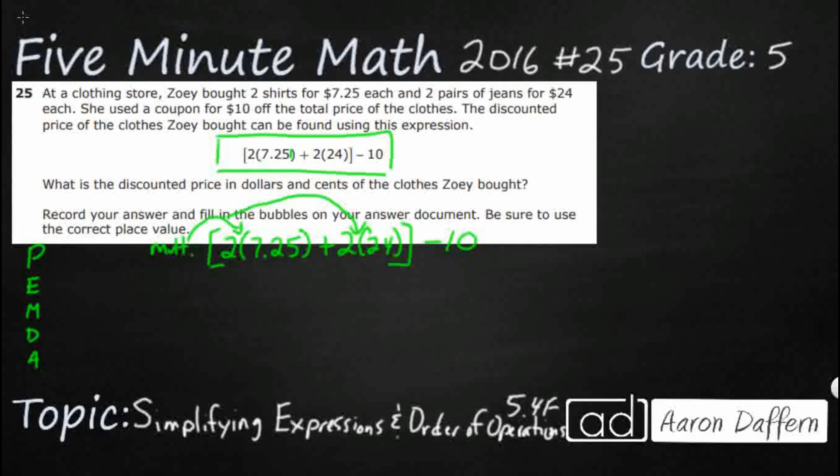Let's center real quick around our order of operations. PEMDAS. Please excuse my dear Aunt Sally. We are going to deal with any parentheses first. Let's see if we can get rid of these parentheses. Really, I've got these two chunks right here. Let's see if we can do this. First, I've got 2 times 7.25. Let's do that right here.